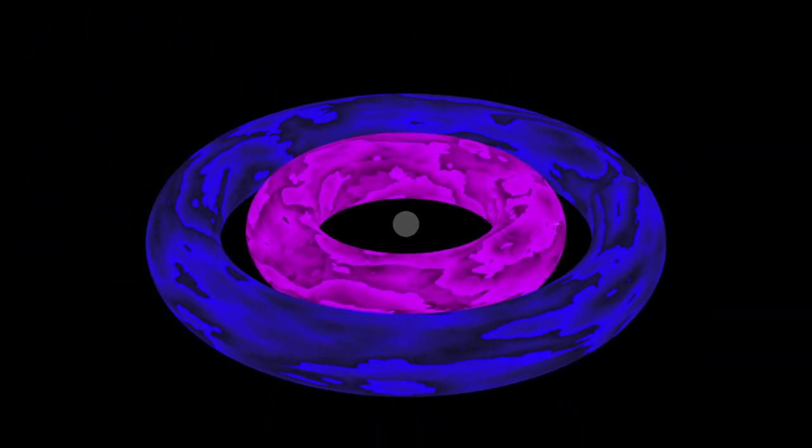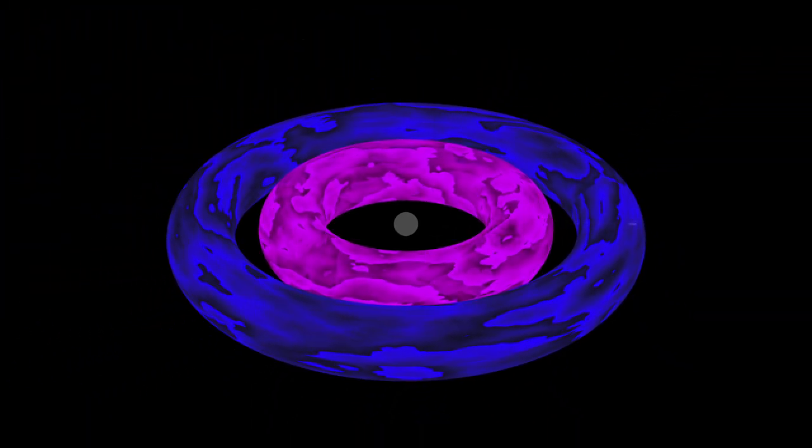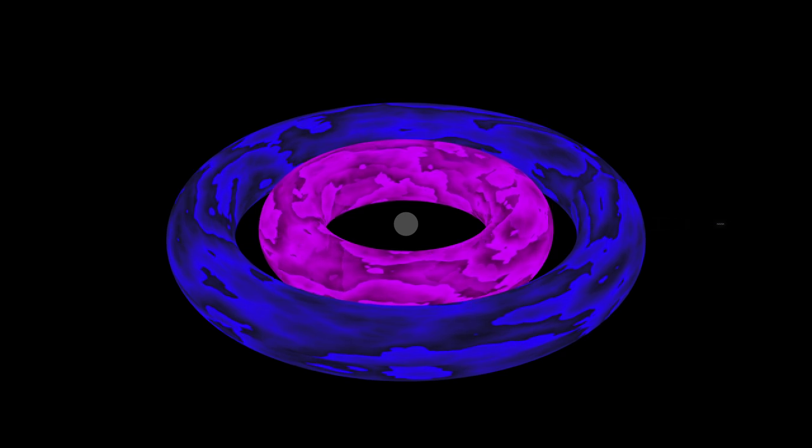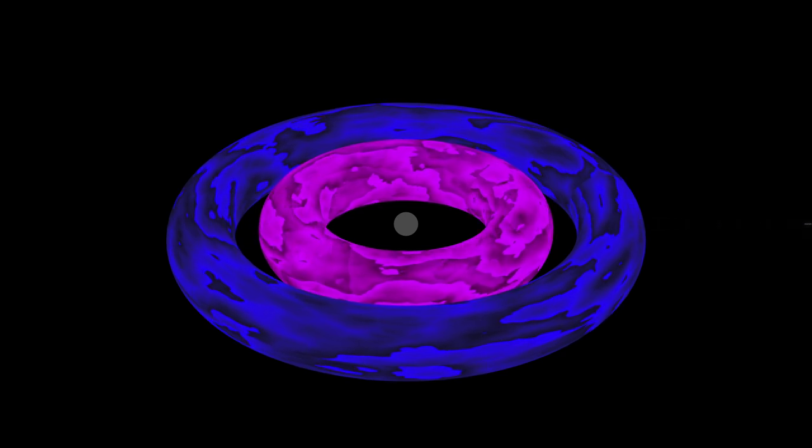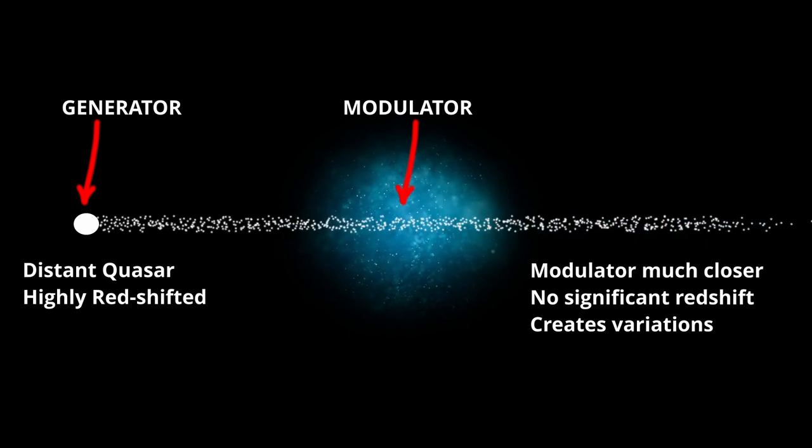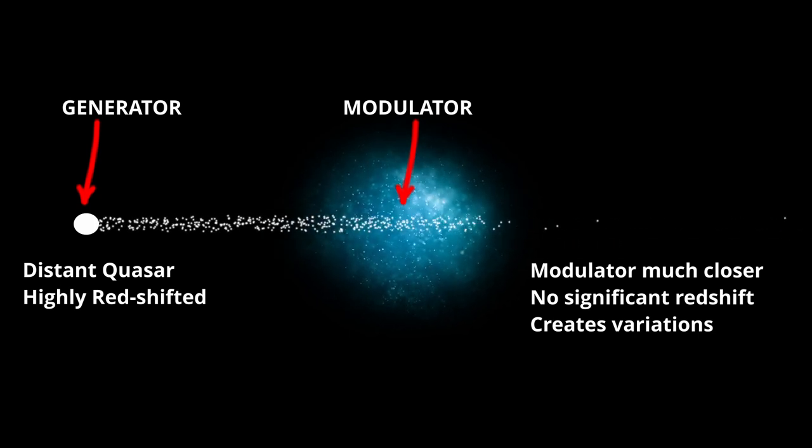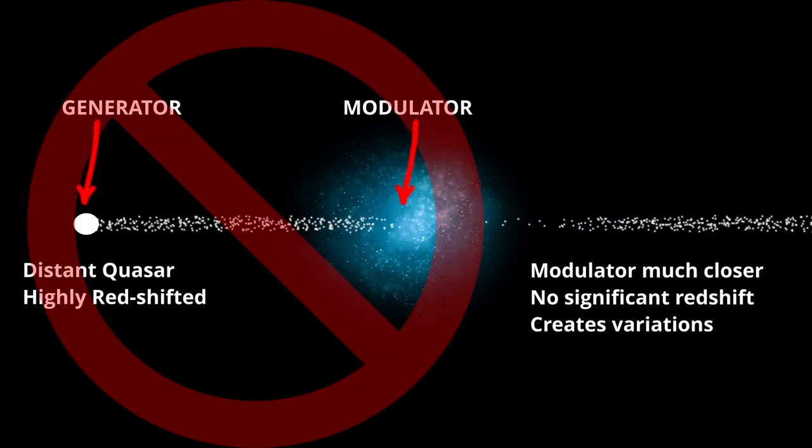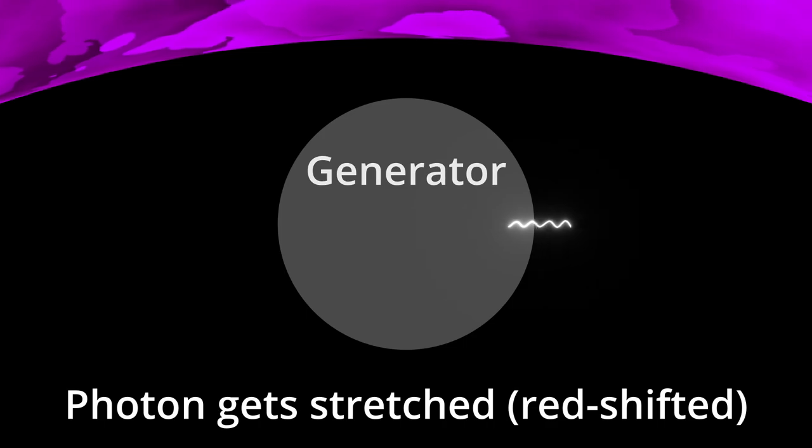There are two possibilities he outlines. It lies close to the generator which therefore has an intrinsic redshift or it lies on the path to us and close enough to us for cosmological redshift to be small. He rules out this last possibility as implausible leaving just intrinsic redshift as his solution.